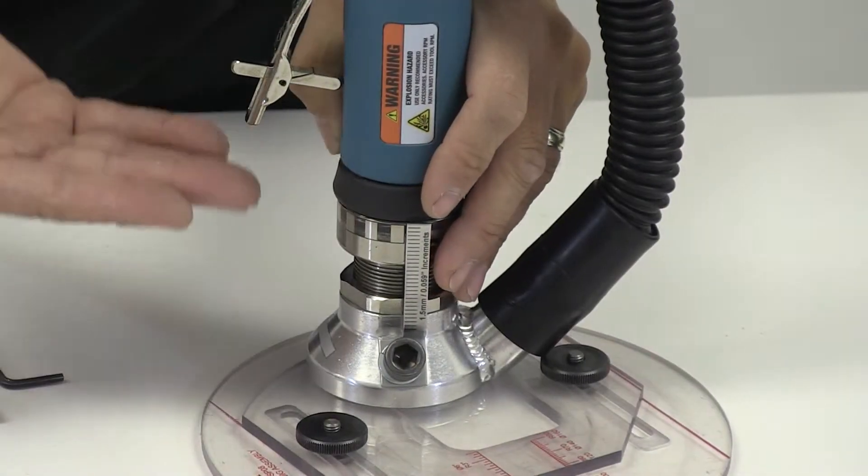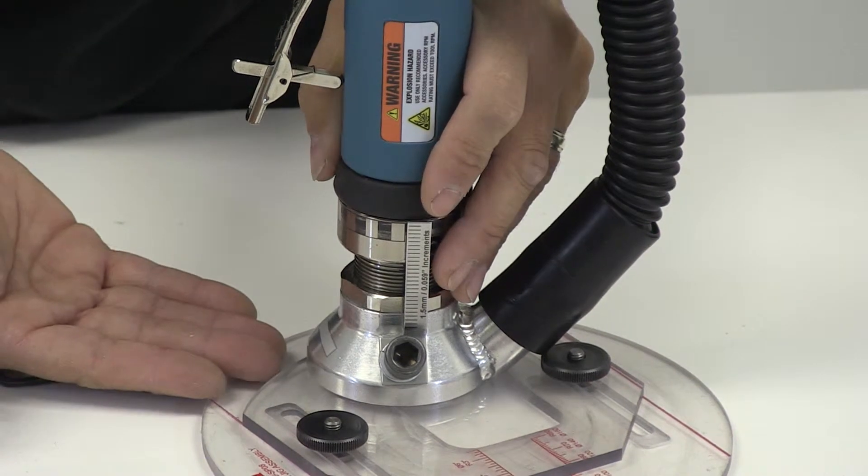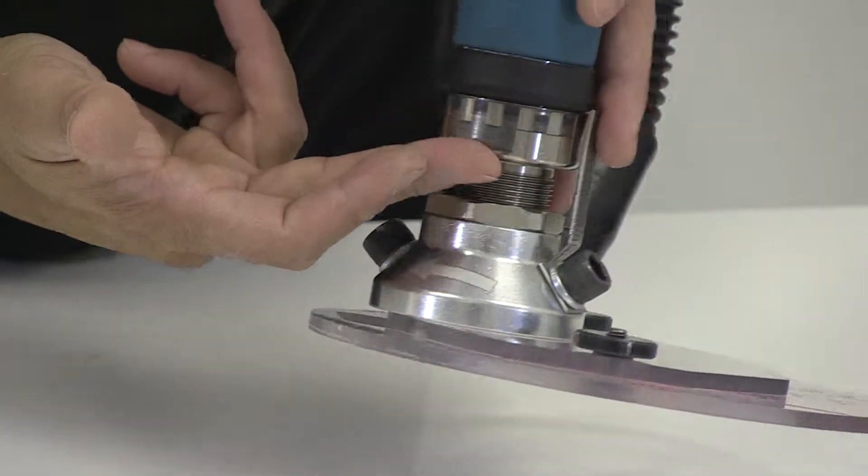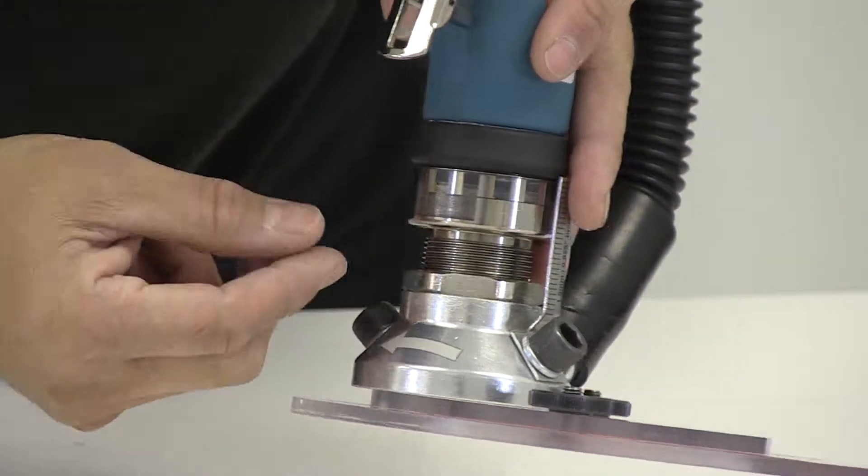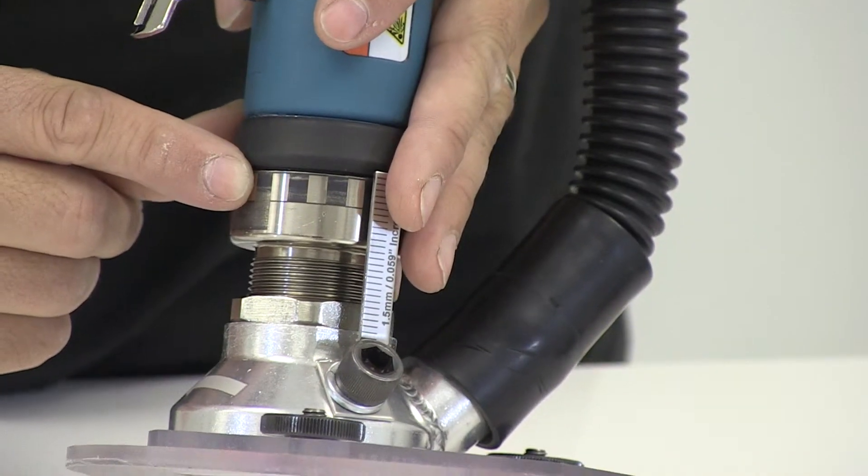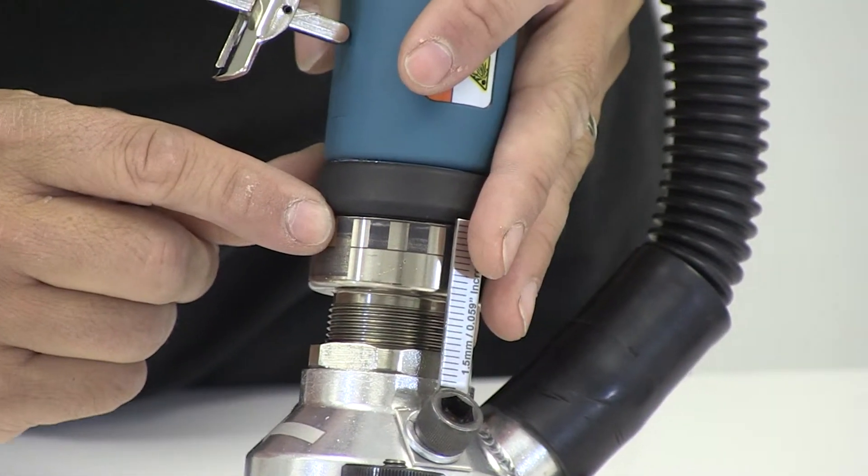When we're adjusting the router in terms of depth, we have a number of scales. On the collar itself, we have a scale which has small increments. These small increments are 0.05mm or 0.002 inches.